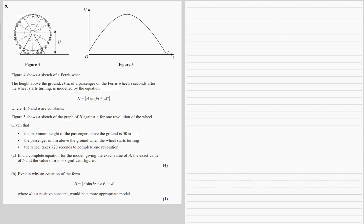A, B, and alpha are constants. Figure 5 shows a sketch graph of h against t for one revolution of the wheel. Given that the maximum height is 50, so the maximum height up here will be 50, the passenger is one meter above the ground when it starts turning, and it takes 720 seconds to complete one revolution, so this is 720.